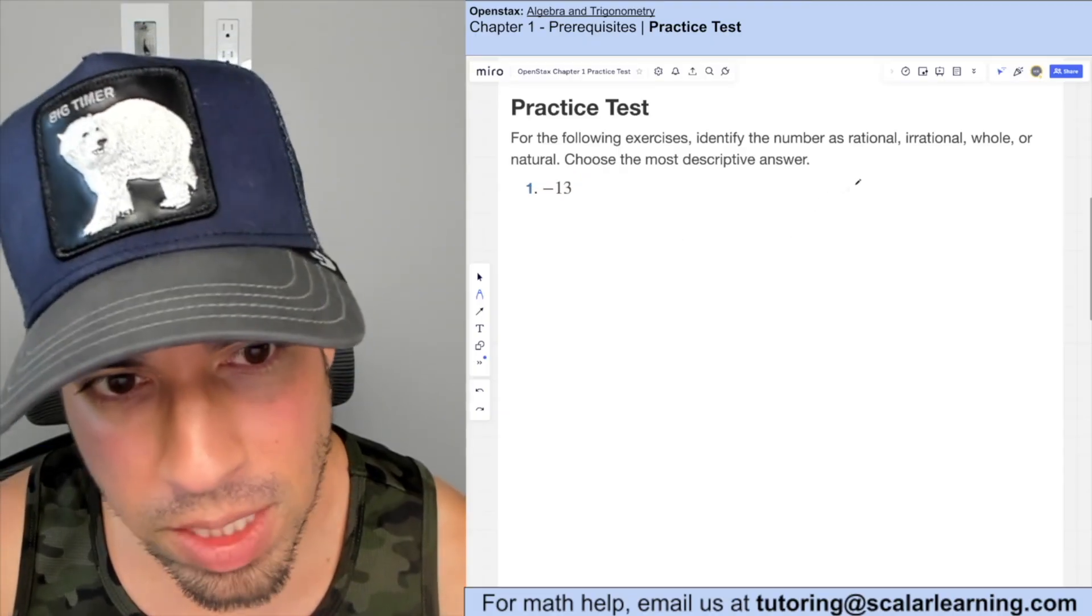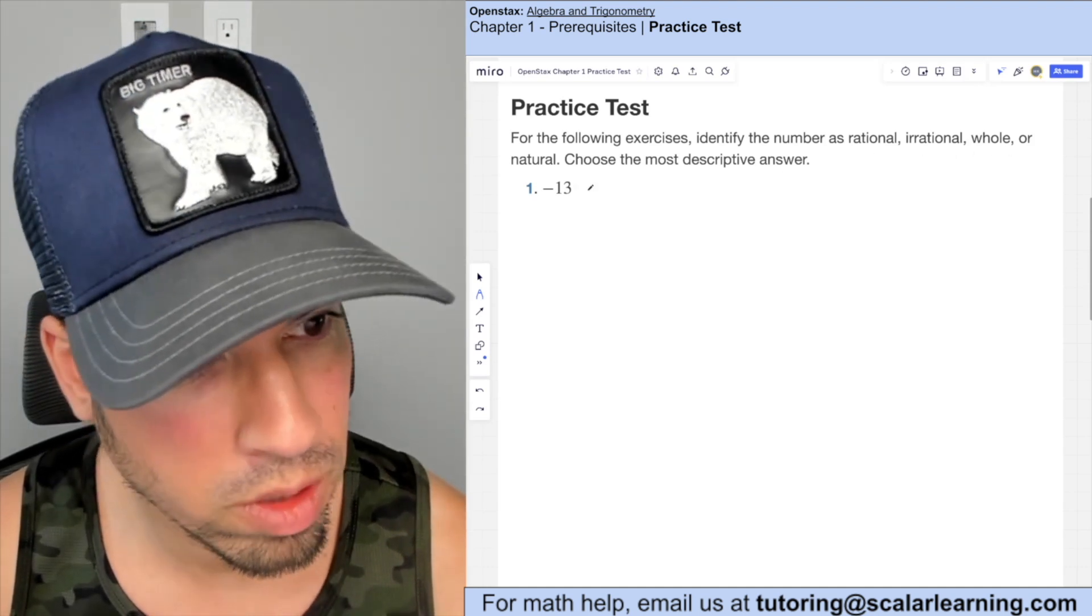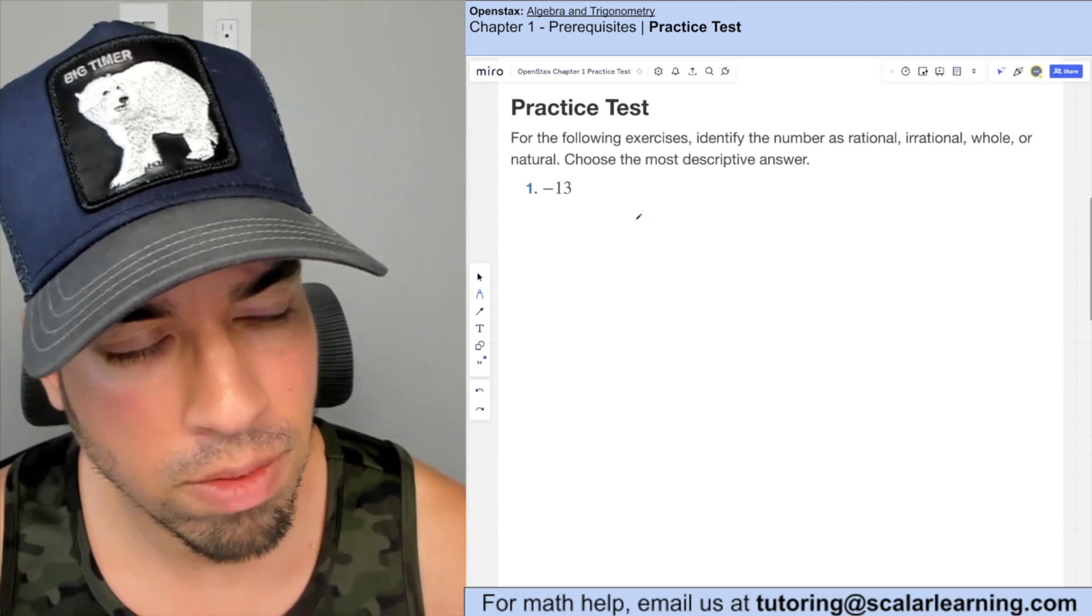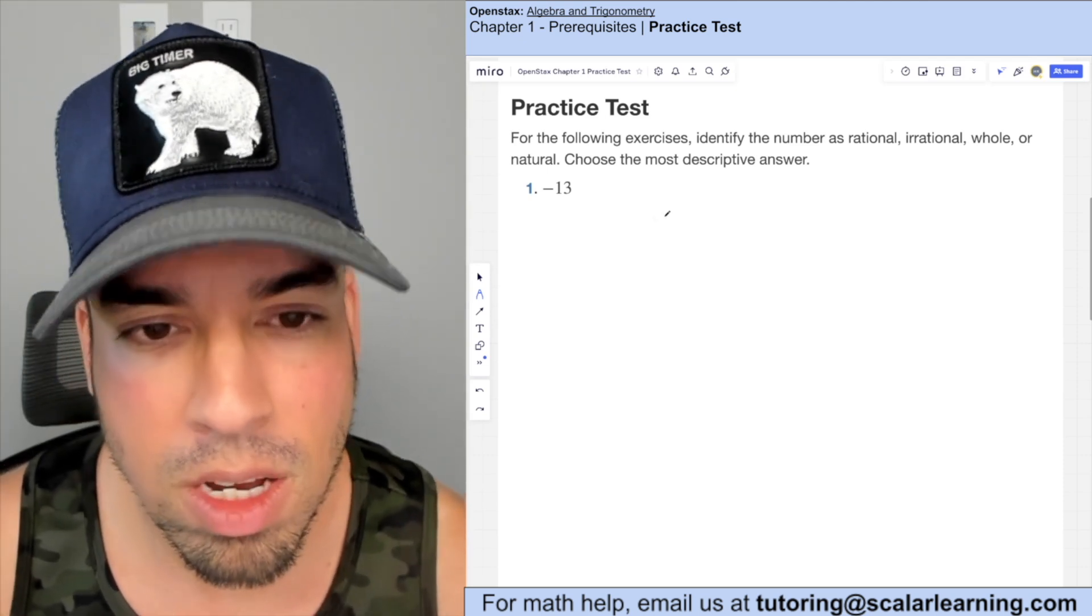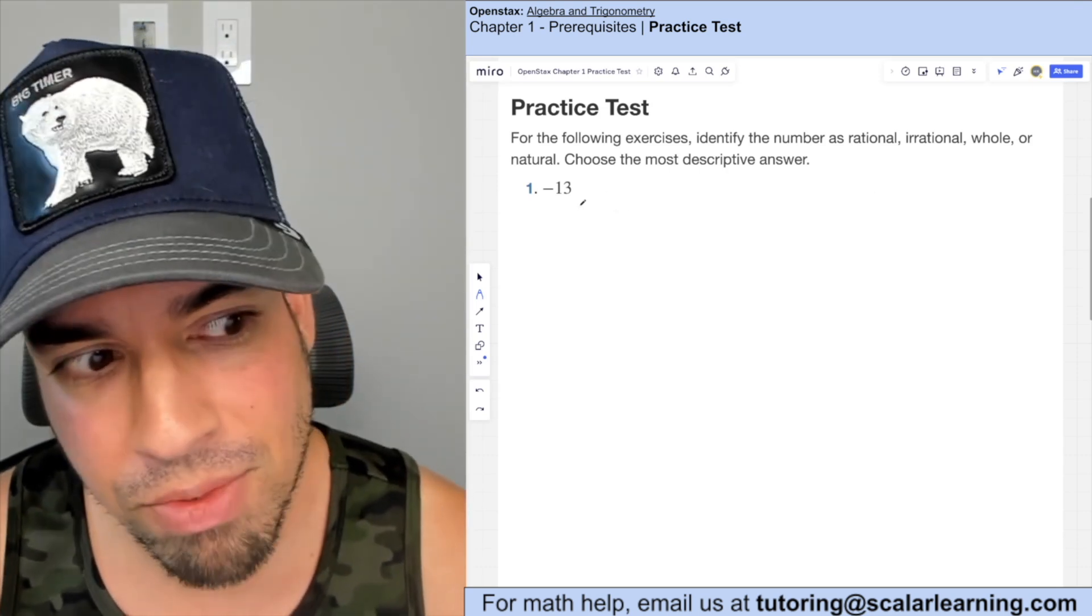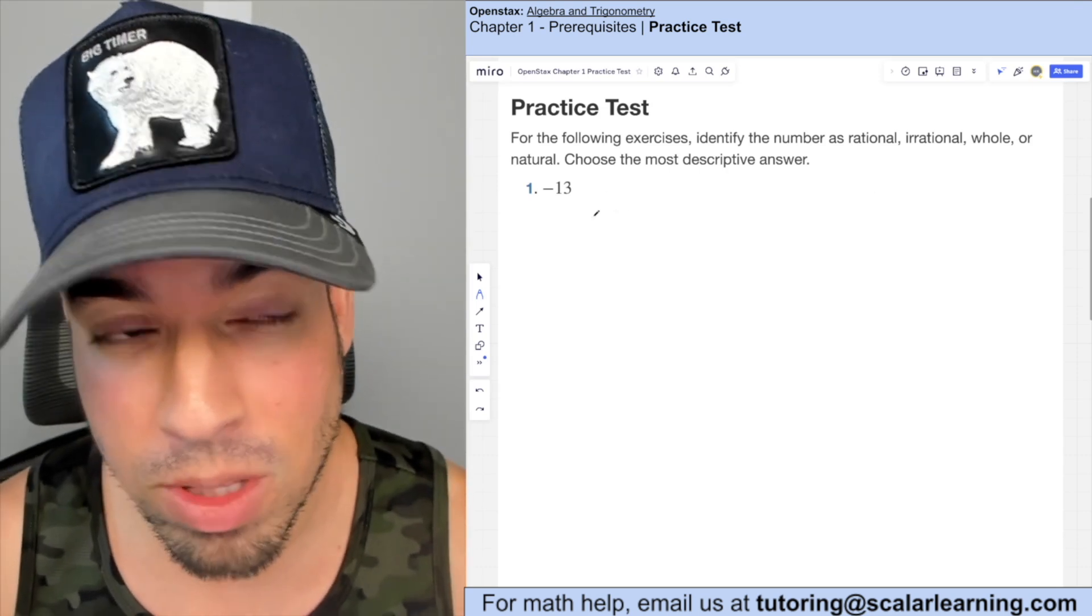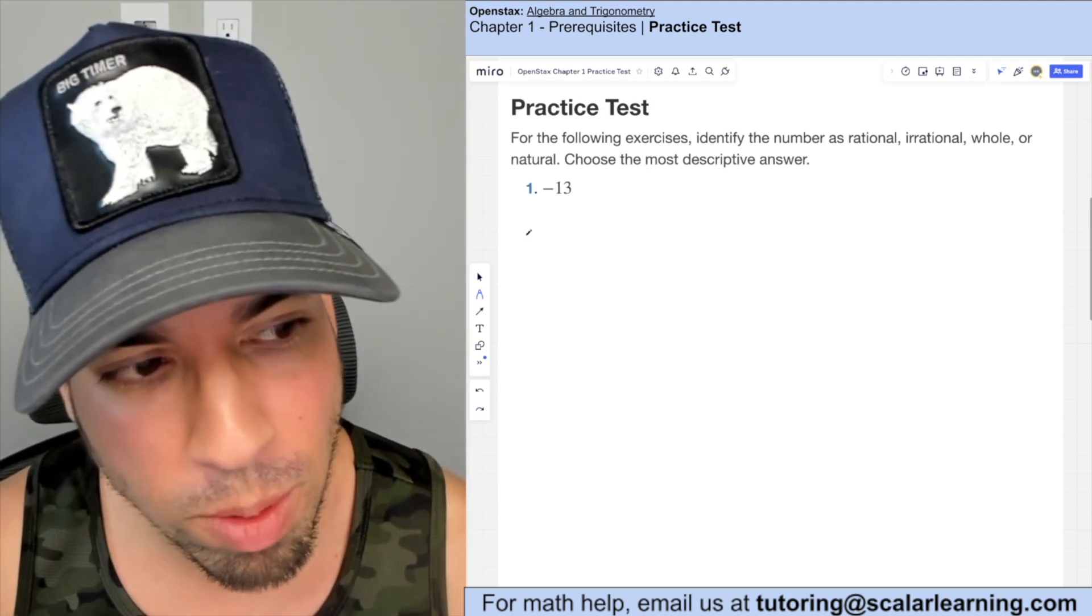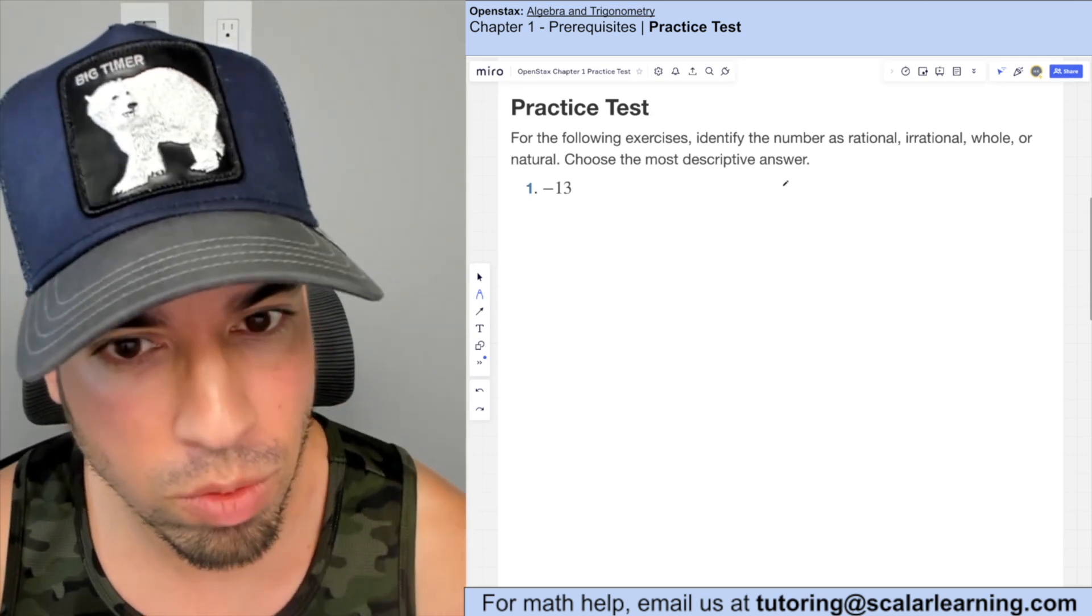So this one we're meant to classify this as either rational, irrational, whole or natural. So we want to go back and remember the categories. Now of course, this is definitely a real number. So first it says, is it rational or irrational? And it's definitely rational because any number that can be represented as a ratio or a fraction of two integers, this can be represented as negative 13 over one. So we know that.